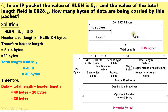Therefore, the data bytes will be equal to the total length minus the header size. The IPv4 header has 5 rows, and each row occupies 4 bytes because each row covers 0 to 31 bits — that is, 32 bits, which means 4 bytes. So the minimum value of the HLEN field should be 5 in decimal, and the maximum value should be 15 in decimal or F in hexadecimal.